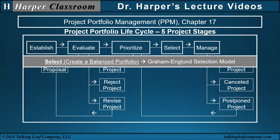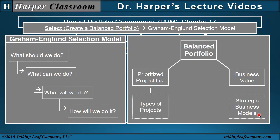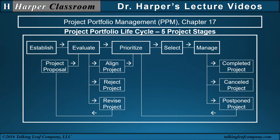The select stage. Create a balanced portfolio. Wysocki suggests the Graham-England selection model. In this select stage, a balanced portfolio refers to a balance between the prioritized project list, prioritized according to the types of project and the funding allocations, and the business value indicated in the strategic business models from the established stage. The Graham-England selection model is used to balance the portfolio through the steps of what should we do, what can we do, what will we do, and how will we do it. The output of this selection stage is the final portfolio for implementation. And that moves us to the manage stage.